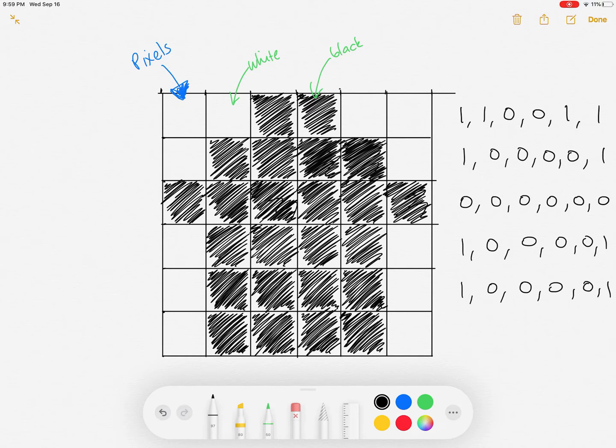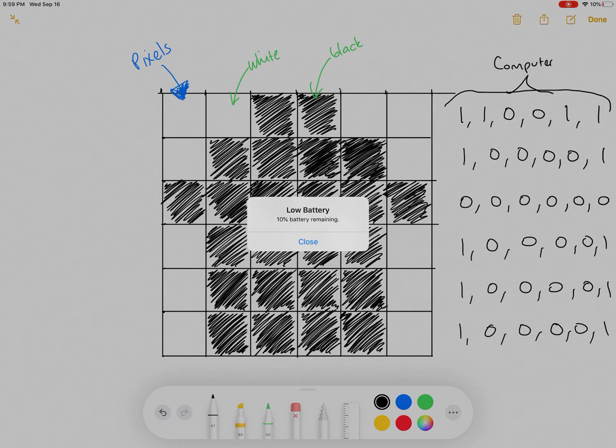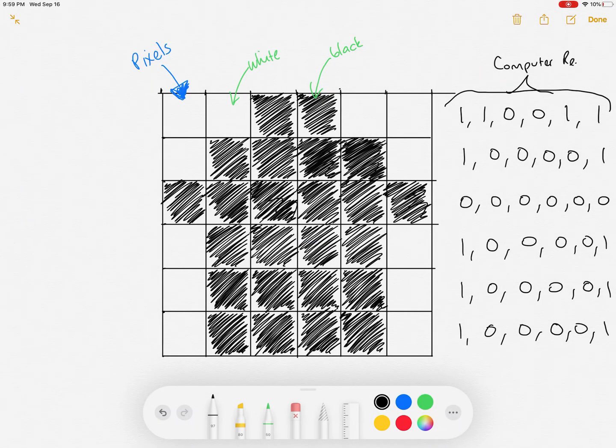And then the row below would be exactly the same, and the row below that would also be exactly the same. So this representation over here represents what the computer would see. So this is the computer representation.